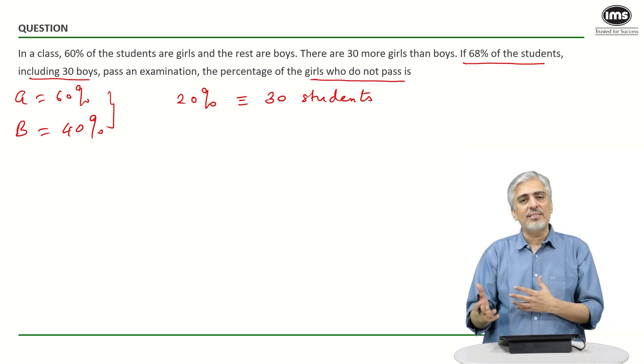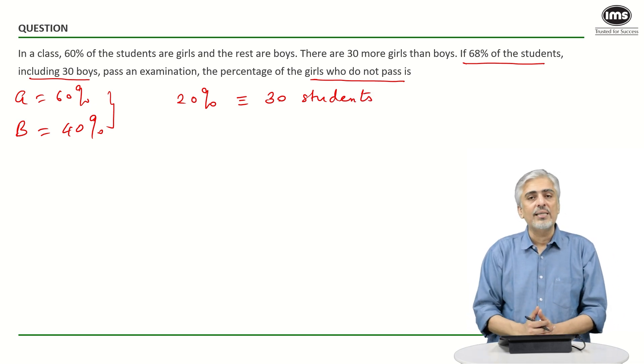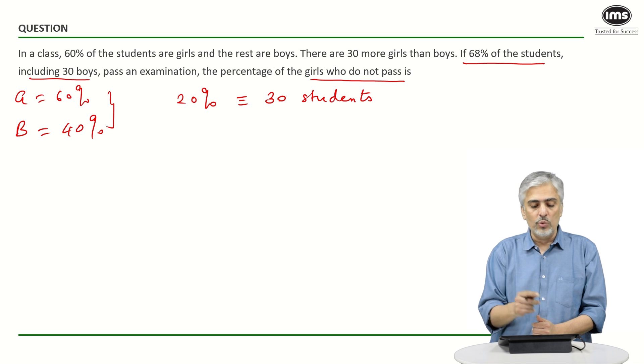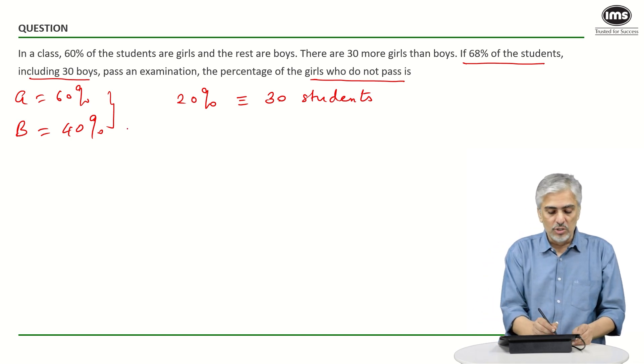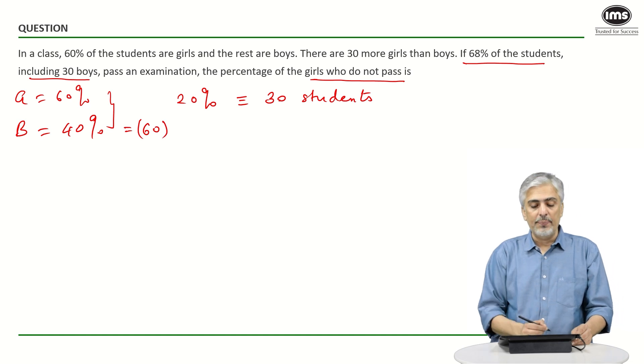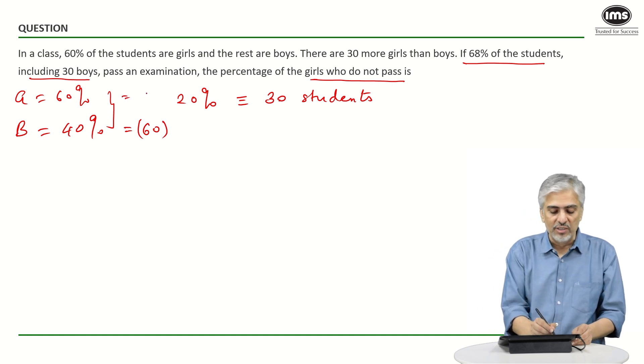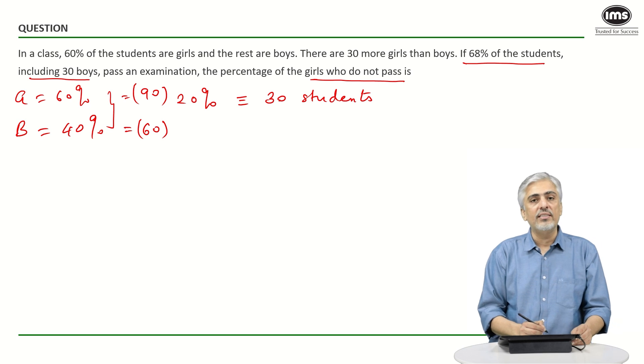I can easily get 100% or the number of boys and girls separately. 20% is 30, so 40% will be 60. The number of boys is 60, and 60% will be 90, so the number of girls is 90.